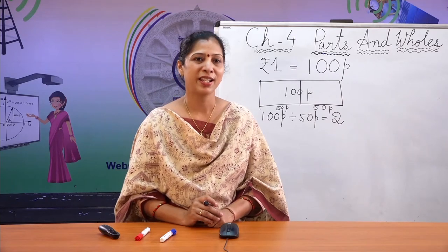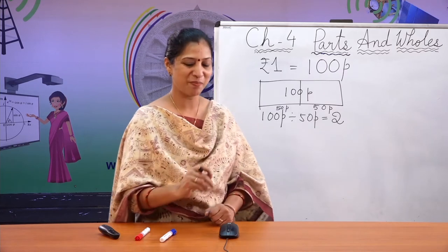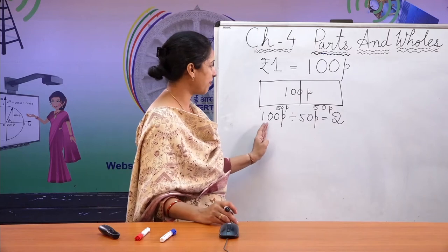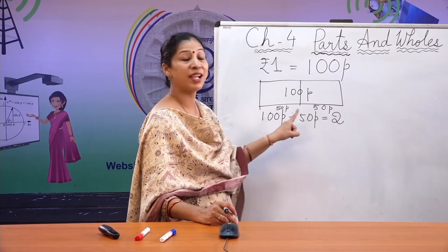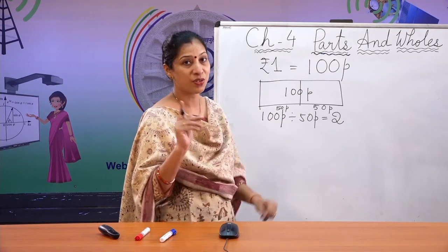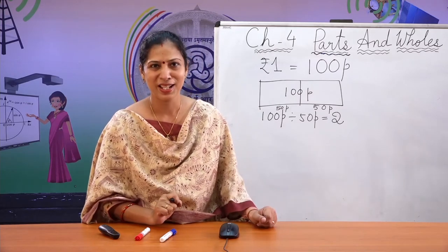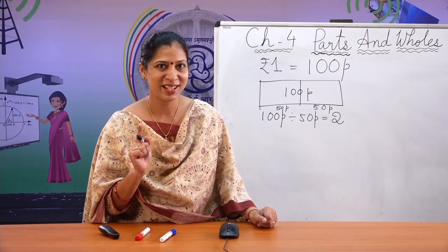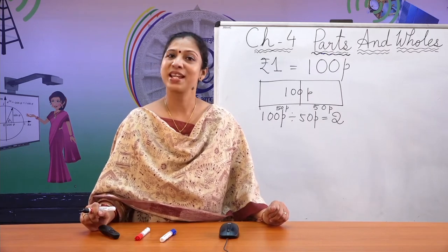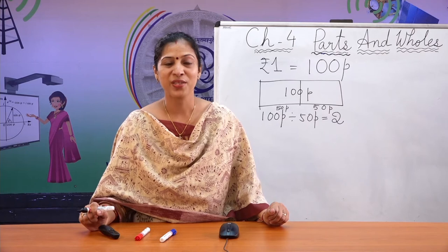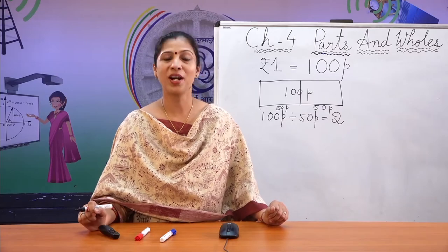Similarly, how many 25 paise will make 1 rupee? 100 paise divided by 25 paise — can you find the answer? The answer is 100 divided by 25 equals 4. So there will be four 25 paise coins in 1 rupee.